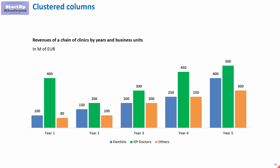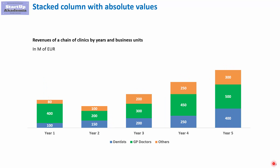If you want to see the behavior of the overall business but also look at the structure at the same time, you can use the stacked column chart with absolute values. Here we see the relative size of revenues for each year, and we also see the main driver for a specific year. For example, in year one we can see that GP doctors are extremely important — they constitute the majority of revenues — whereas if we go to year five, their importance seems to be smaller.